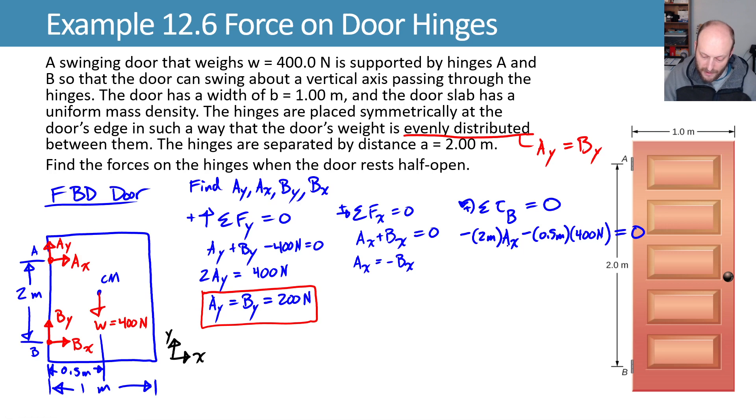We can now solve this one equation, one unknown, for that unknown AX by moving the AX to the other side and then dividing by two. This gives us AX equals negative 100, because 400 times 0.5 is 200, divided by two is 100, negative 100 newtons.